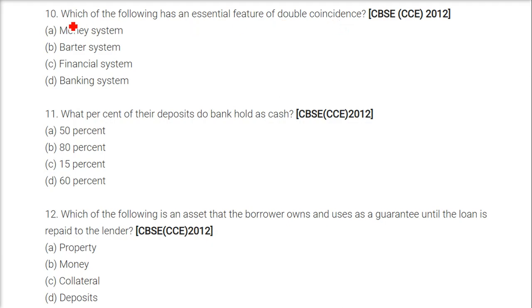Which of the following things has the essential feature of double coincidence? The answer is barter system. Double coincidence means barter system — in barter system, double coincidence has to be there.